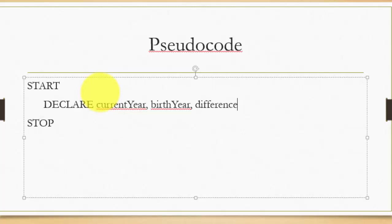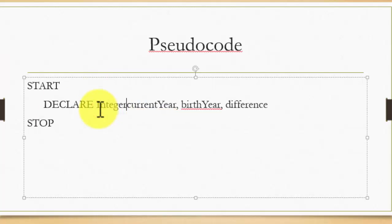As we learned in earlier tutorials, you also need to declare variables with data types. Current year, birth year, and difference will all be integers. So we write: declare integer currentYear, birthYear, difference.